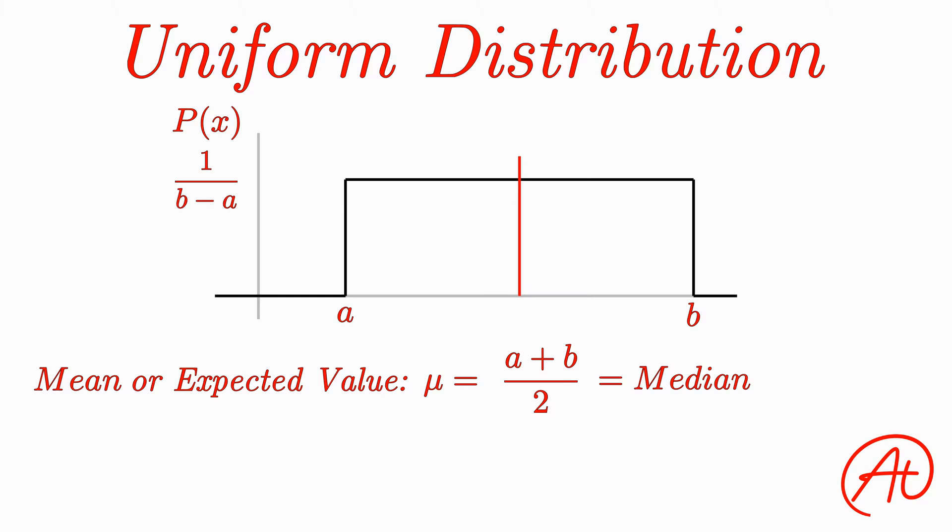Okay, moving on to standard deviation, this formula ends up being a little less intuitive. For a uniform distribution, the standard deviation sigma ends up being the square root of b minus a squared divided by 12.